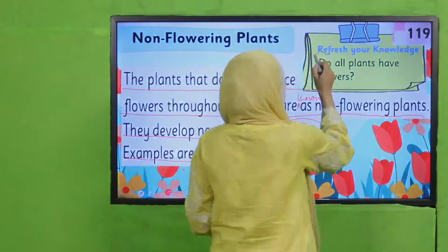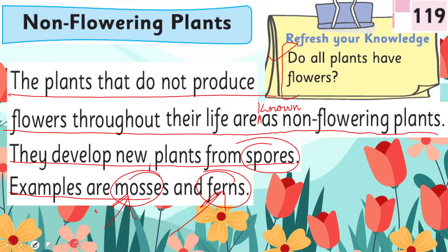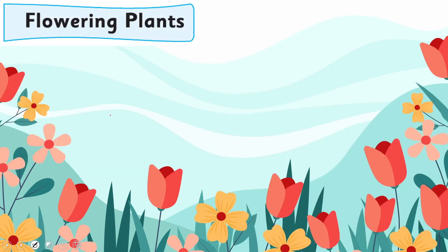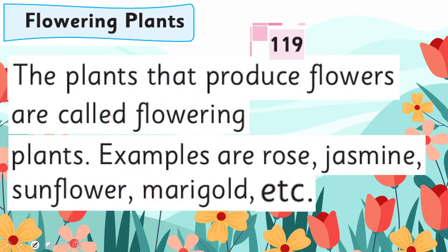So, do all plants have flowers? No, all plants do not have flowers. Ferns and mosses — these are ferns and these are mosses. These are examples of non-flowering plants.